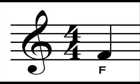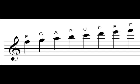An F placed on the F space becomes an F, and so on. Notes can also occur above or below the staff. This is achieved by adding lines to the notes, called ledger lines.